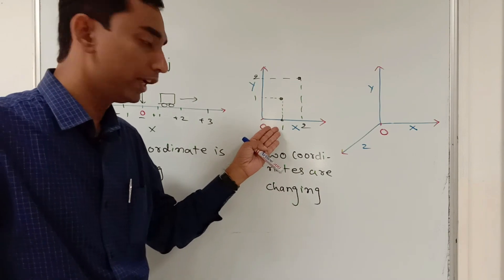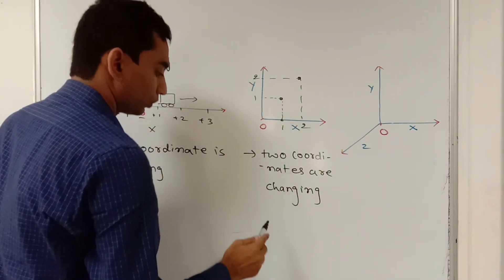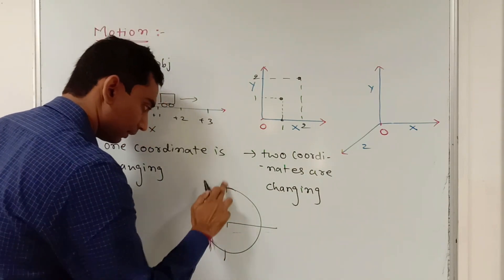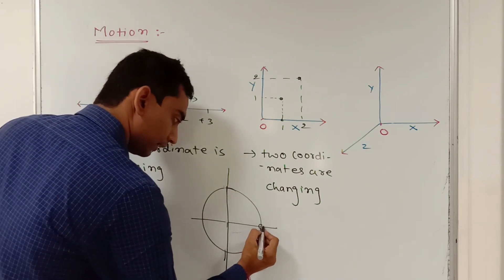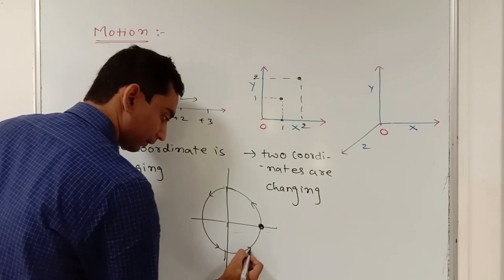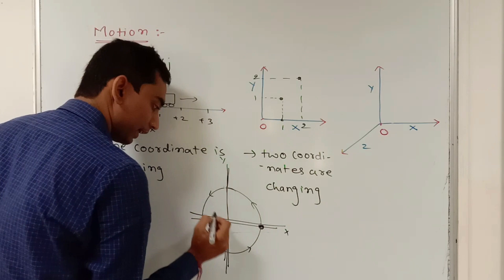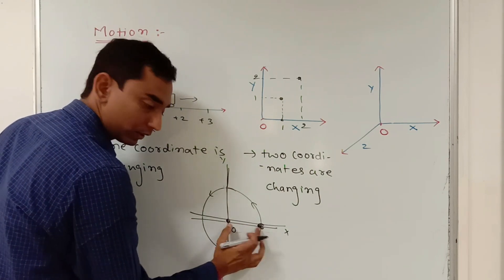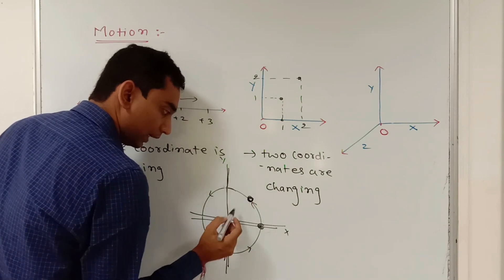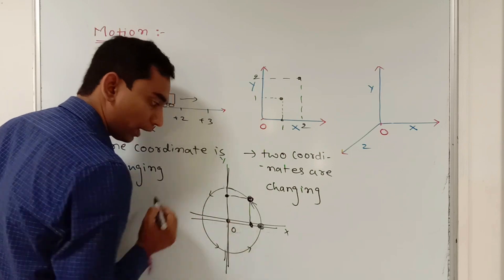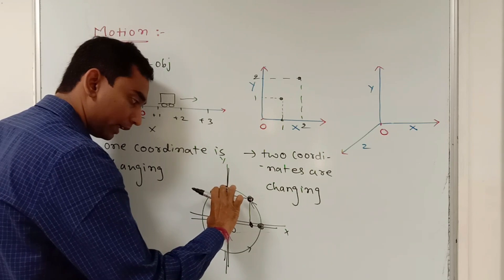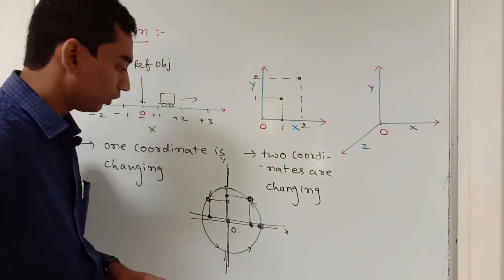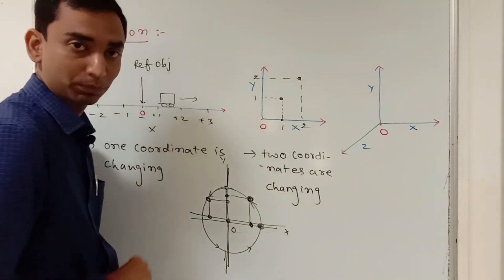A very good example of two-dimensional motion is circular motion. Suppose this is a circular track and there is an object going around it. By default this is my x-axis and this is my y-axis, so the origin is zero. When the body is at one point it will have some finite distance along the x-axis, but as it moves around the track it will have both x and y coordinates simultaneously. So an object performing circular motion is an example of two-dimensional motion.